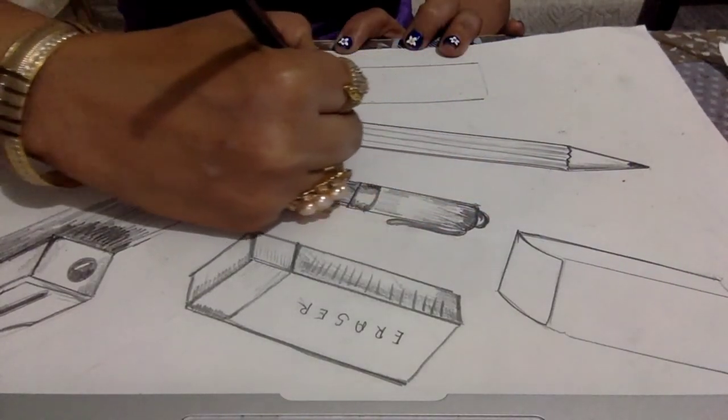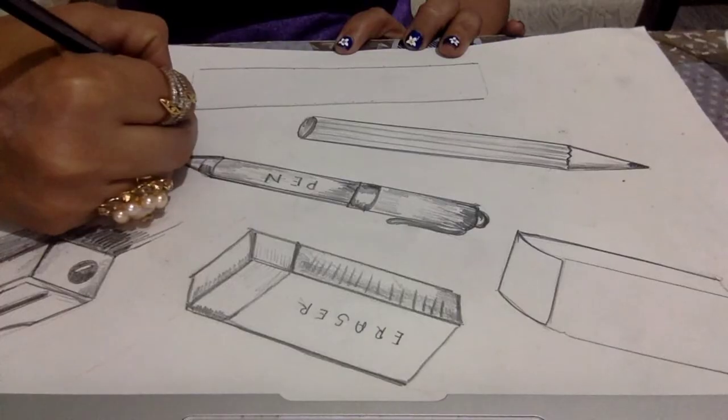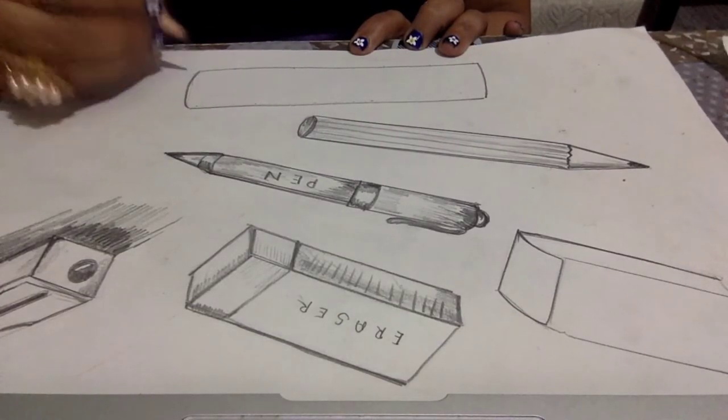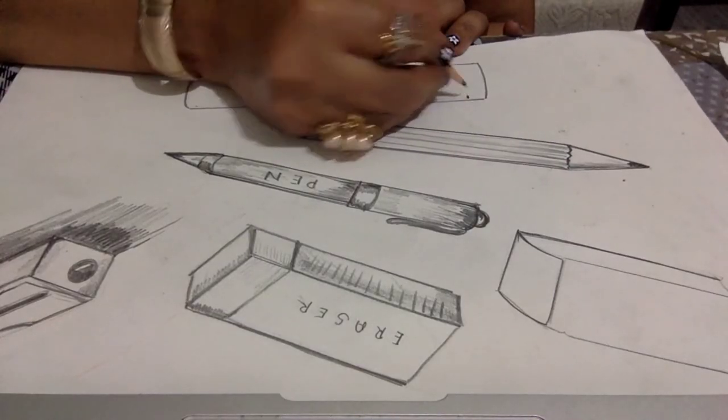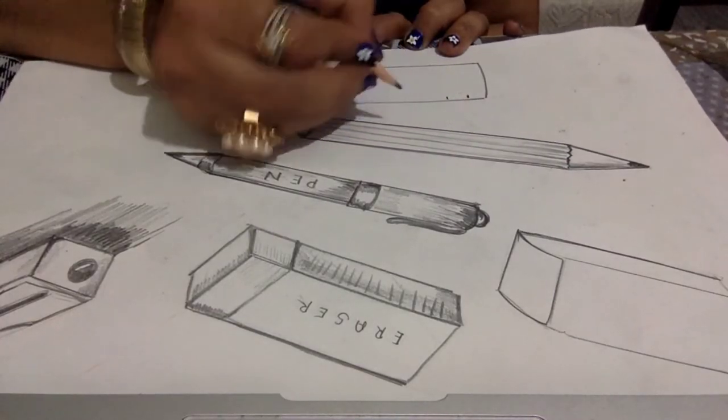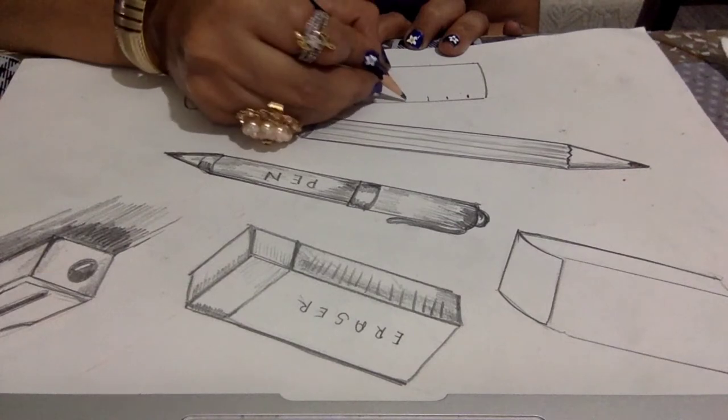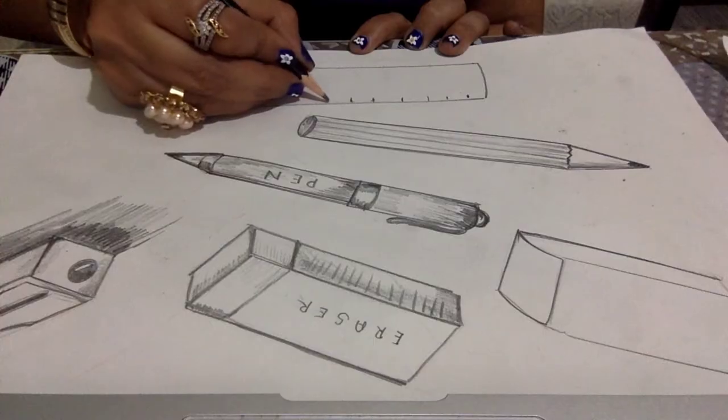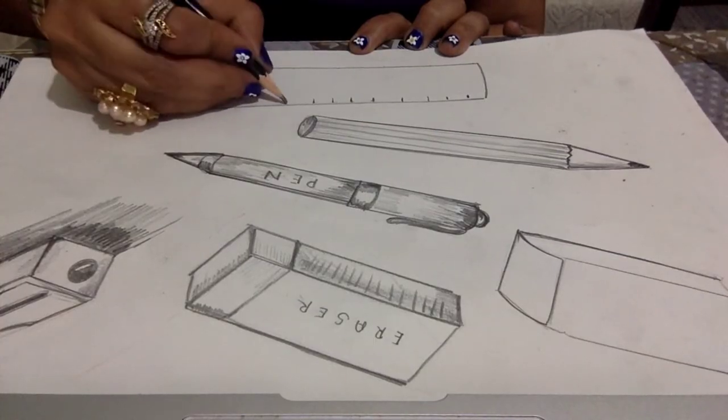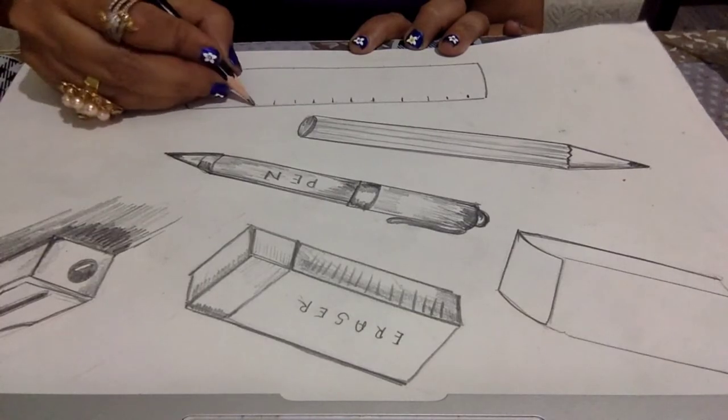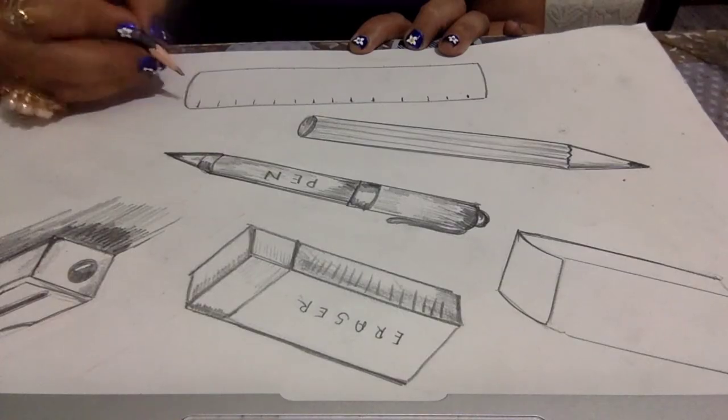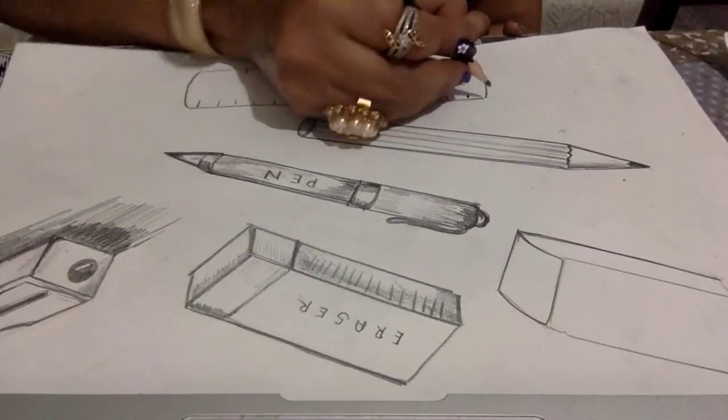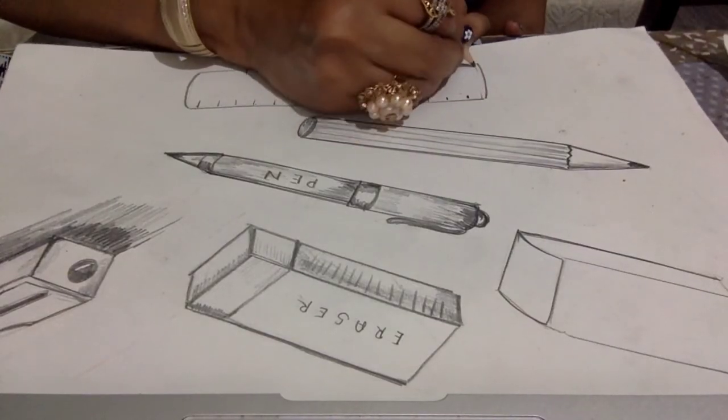Next, the scale. Draw two parallel lines, join from top and from the bottom. Then, give small dots to mark the centimeters of the scale on one side. On the other side, dots for inches of the scale.